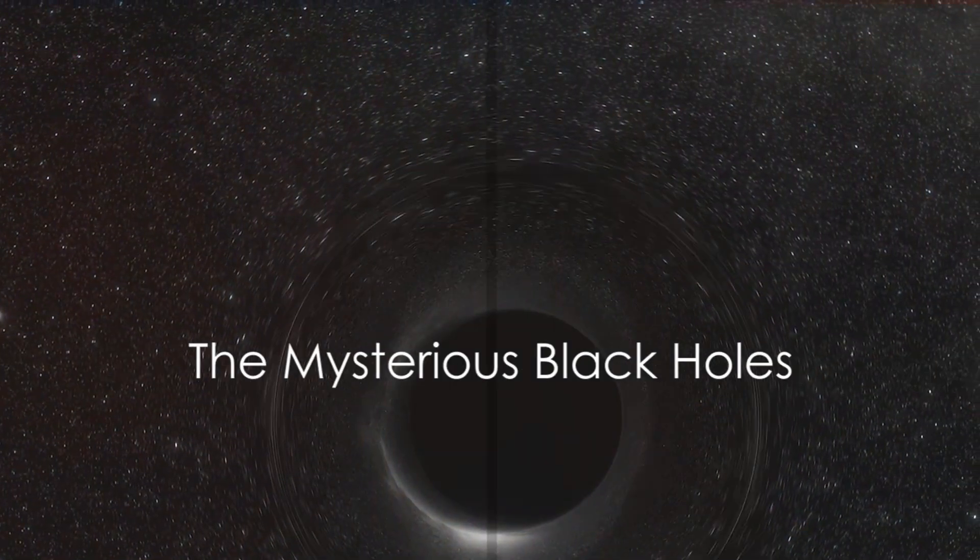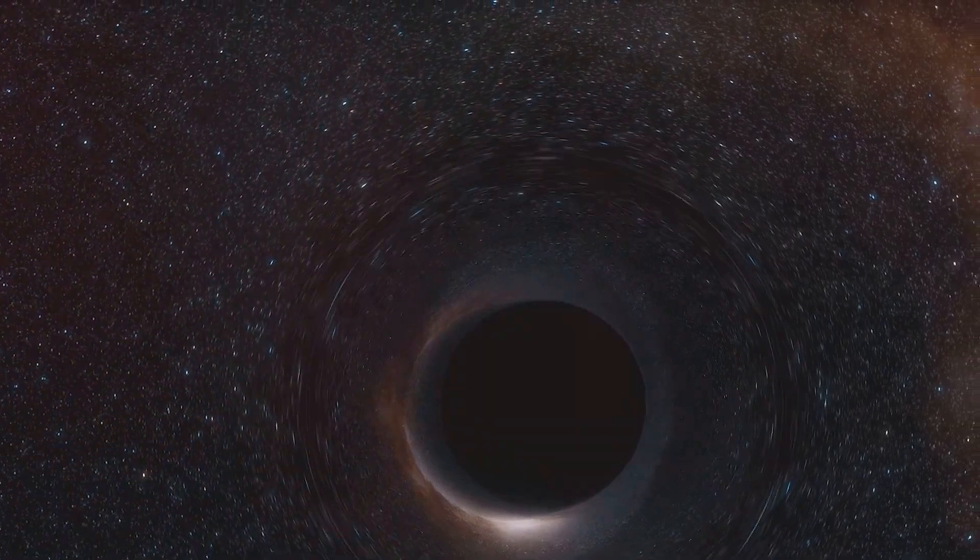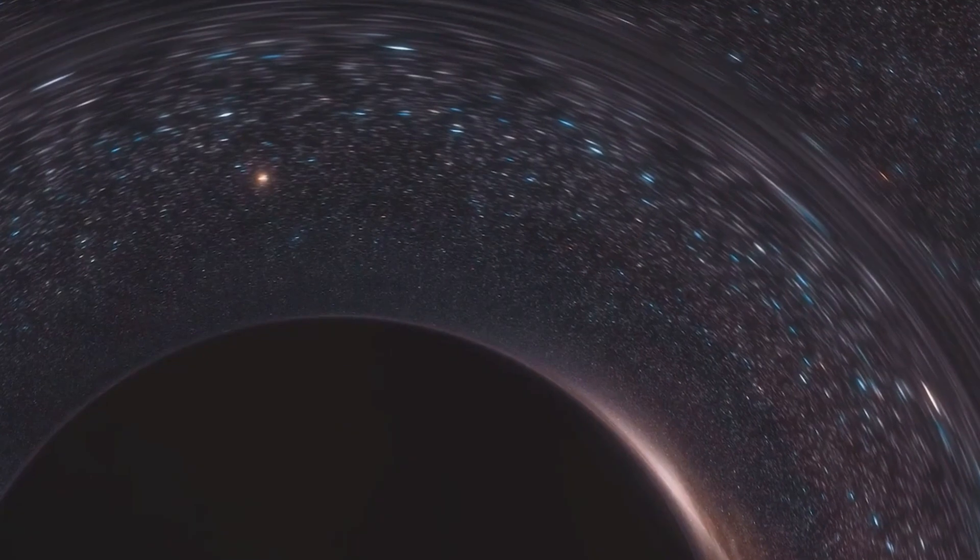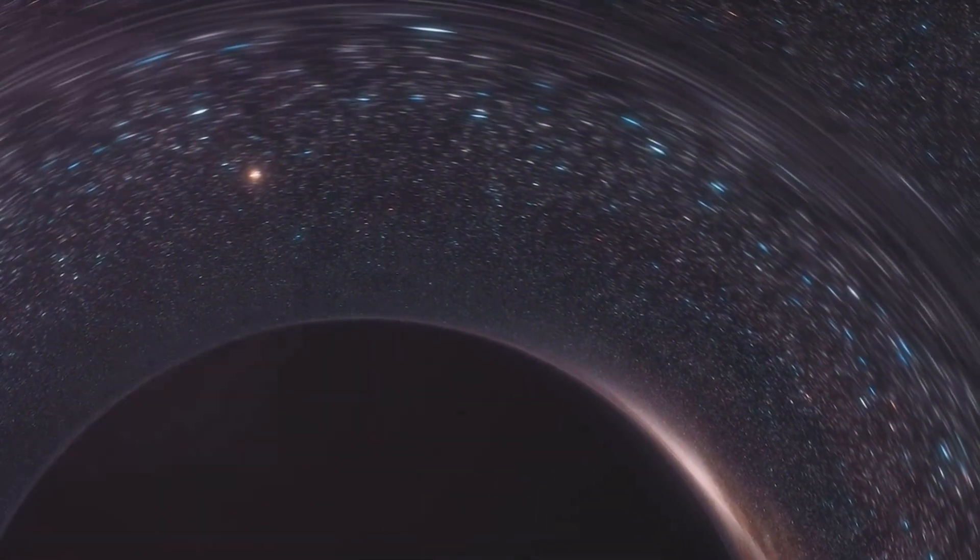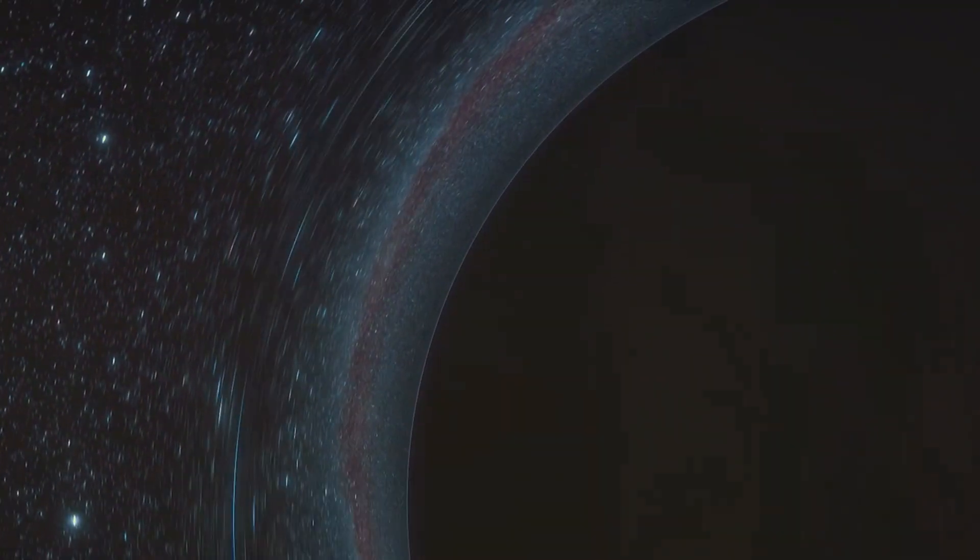What happens when a star dies? It gives birth to one of the universe's most mysterious phenomena, a black hole. These cosmic beasts are the end result of massive stars that have exhausted their nuclear fuel. Once the star's outer layers have been expelled, its core collapses under the weight of gravity, forming a black hole.